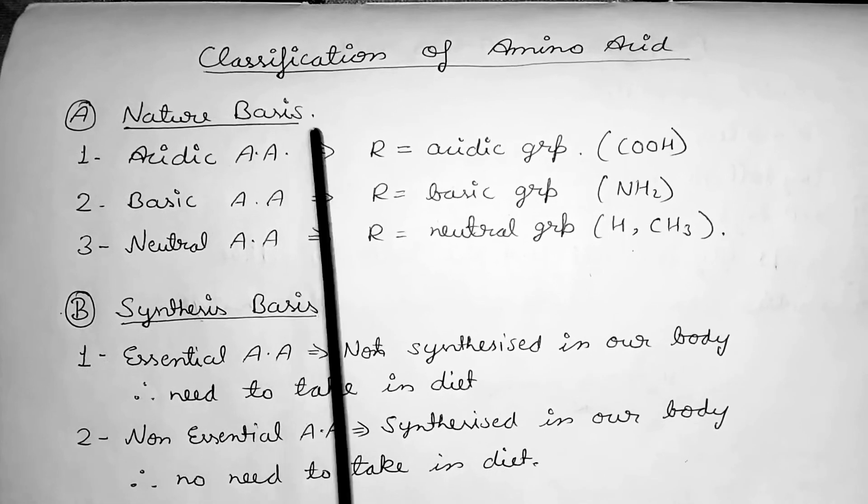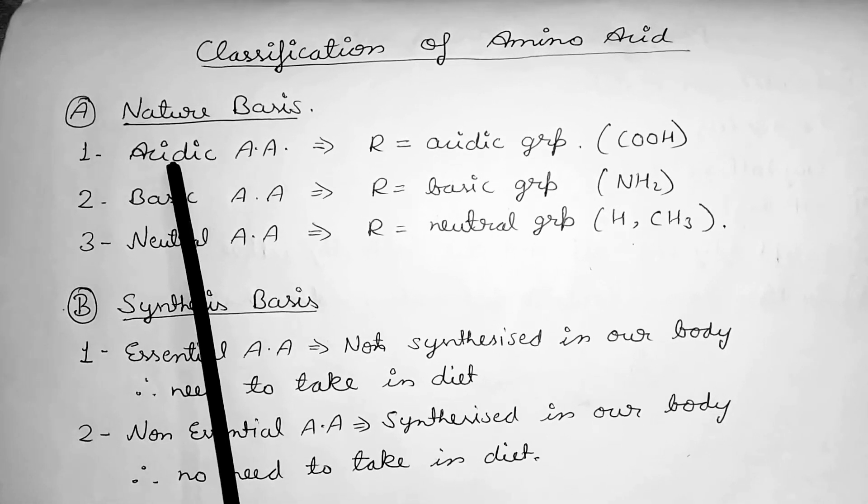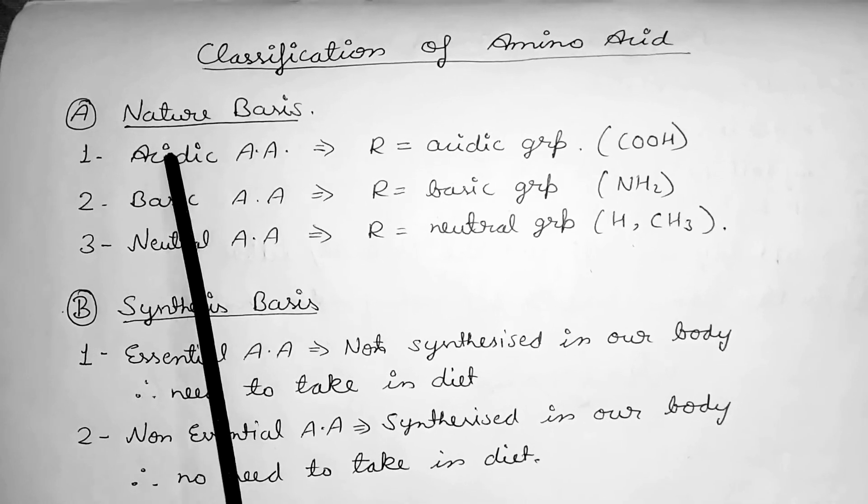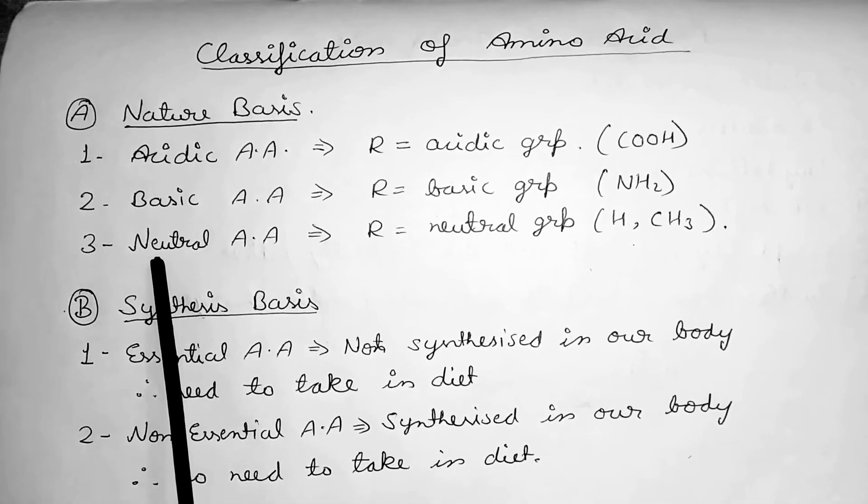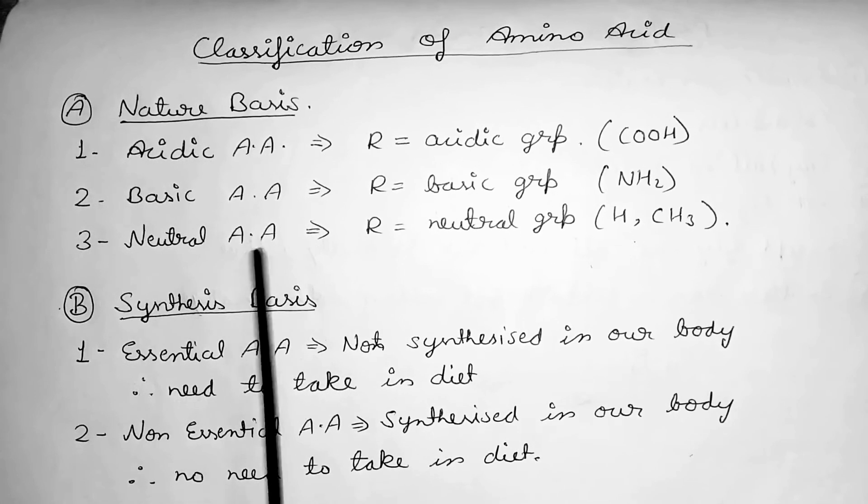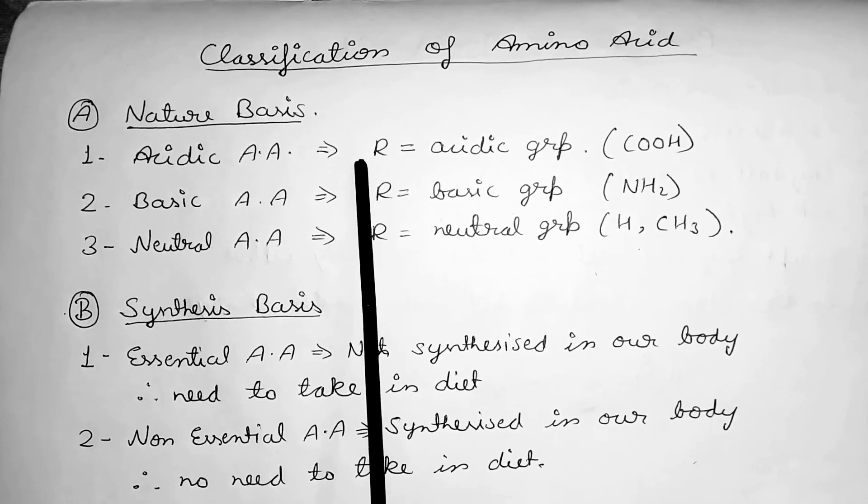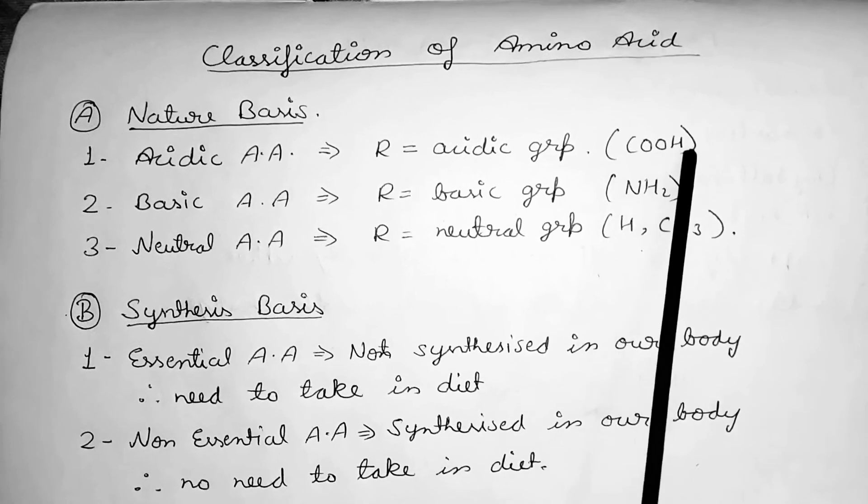the other is synthesis basis. So first one, nature basis, has three types: one is acidic amino acid, second one is basic amino acid, and third one is neutral amino acid. Acidic amino acid means COOH